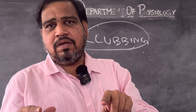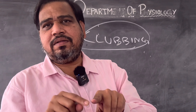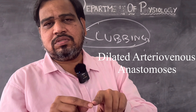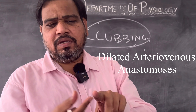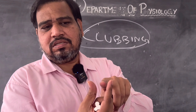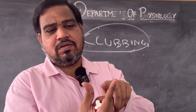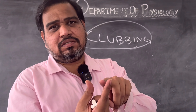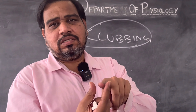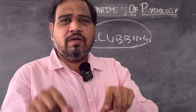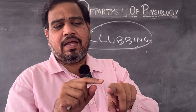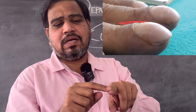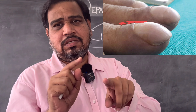The cause for clubbing is usually due to dilated AV anastomosis — arteriovenous anastomosis dilation. Because of the dilation of the blood vessels, there will be enlargement of soft tissue of the phalanges. That is called clubbing. One more definition is obliteration of the angle between nail and nail bed, which can also be called clubbing.